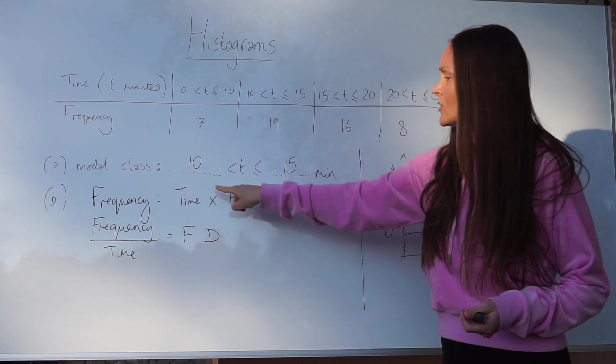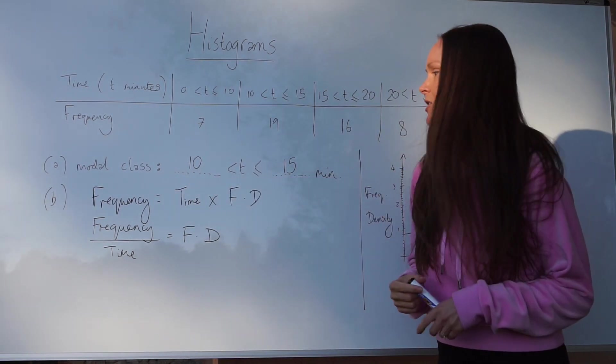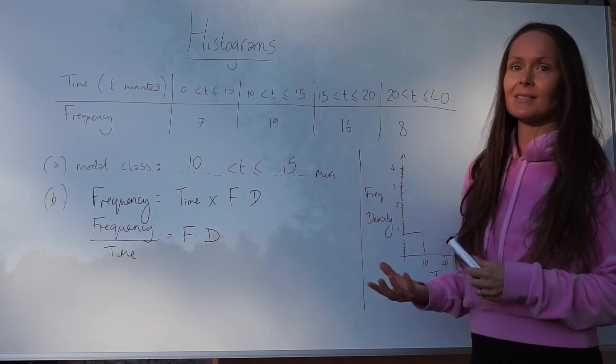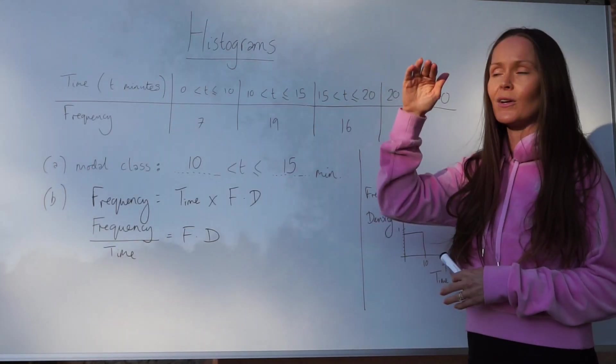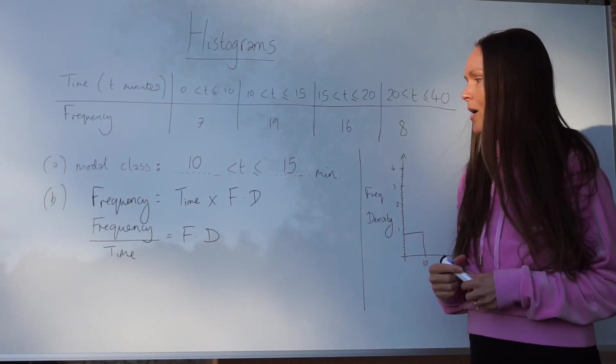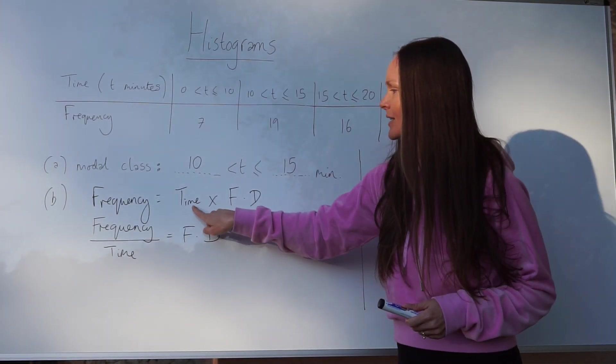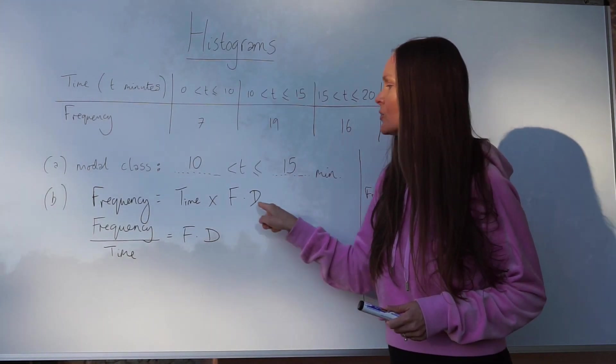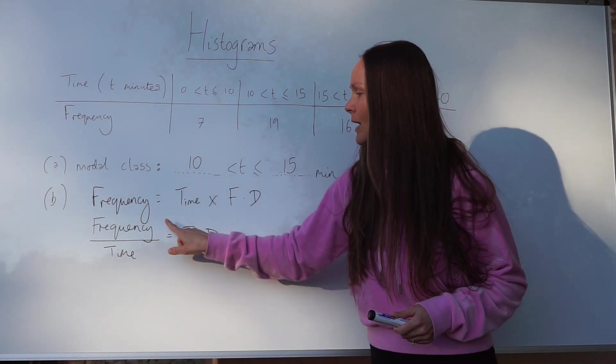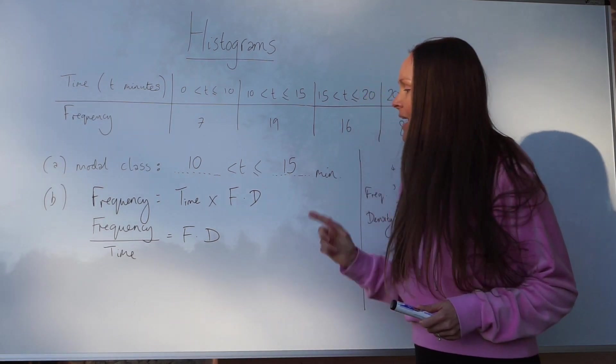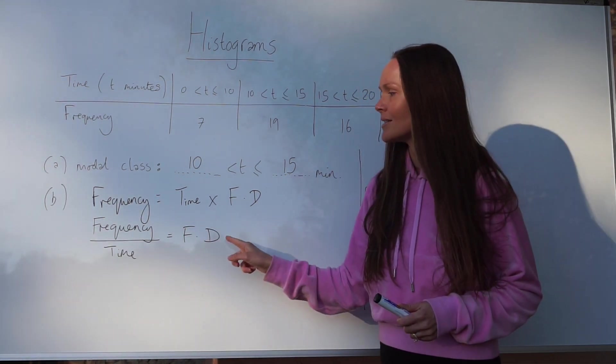If we were to rearrange that equation to equal frequency density, because that's what we need to work out for all of these - we need to work out the height, which is the frequency density, before we can draw the bars - you need to divide by time. So if we divide by time we get frequency divided by time, and that is how you calculate frequency density in general.